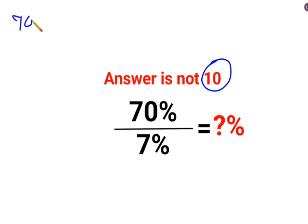See now whenever you have a percent sign, in this case we have 70%, you can convert it into a fraction by dividing 70 by 100. So basically your question has now shifted to 70 upon 100, divided by 7% which can be written as 7 upon 100.